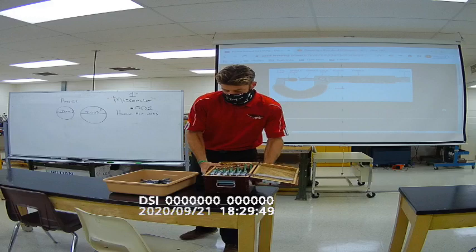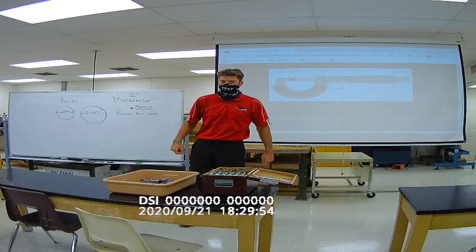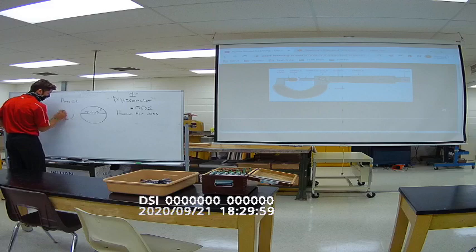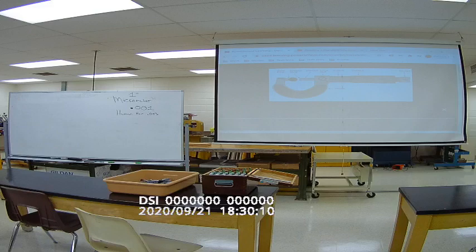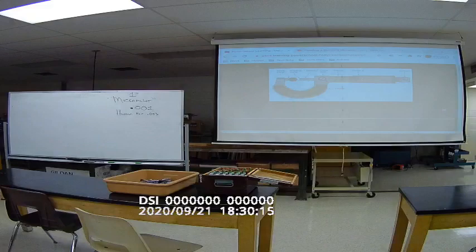They make micrometers that are 24 inches with a little thimble on the side. They make big ones. If you had to measure a boat shaft or something out of a giant ship. So, we need to identify the parts right here. I'll kick this down so you can see the light here.